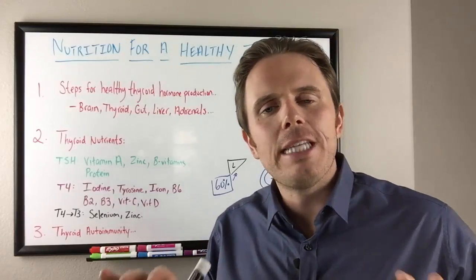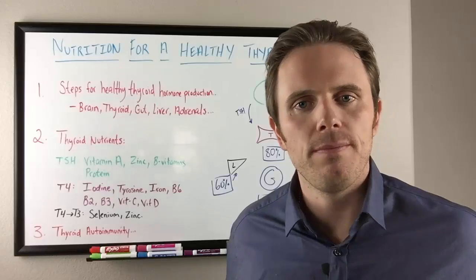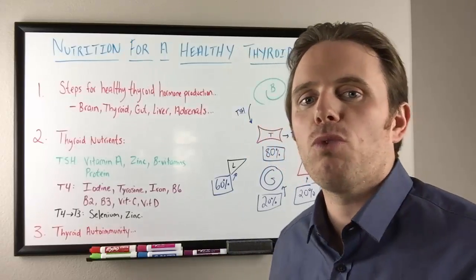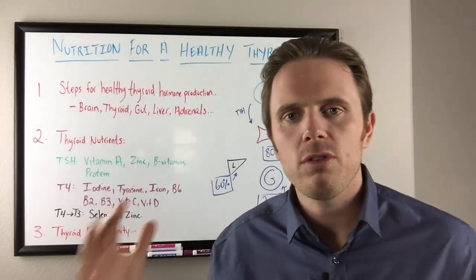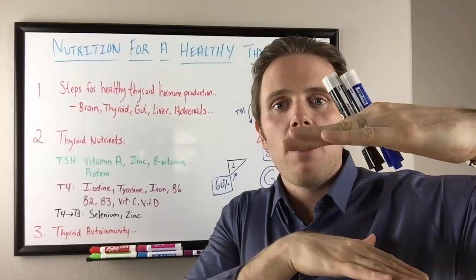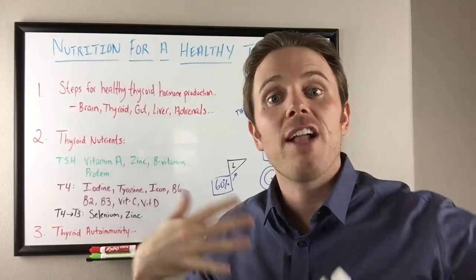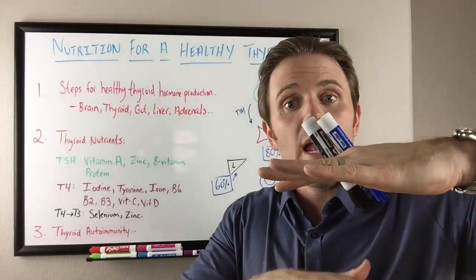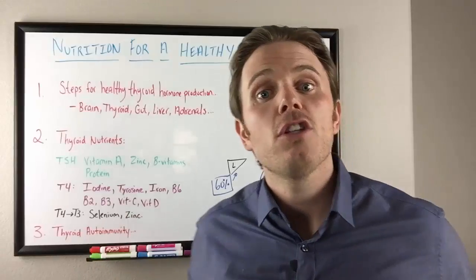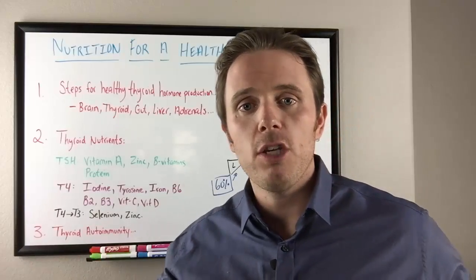When we do thyroid temperature testing, we'll see chronically low temperatures with low thyroid function. With adrenal stress, we'll see aberrations in temperature greater than 0.3 degrees Fahrenheit. If it's just straight low temperature, that's a thyroid dysfunction. If it's low and aberrant, that's thyroid and adrenals. And if it's normal and aberrant, that's just adrenal function. So that's a great way you can use temperature to assess whether you have a thyroid, adrenal issue or both.